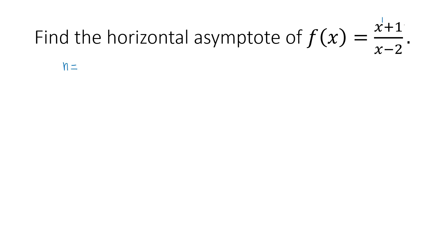The constant 1 actually has x to the 0 beside it. Recall that x to the 0 equals 1, so 1 times 1 is 1. By comparing the exponents 1 and 0, 1 is greater, so the degree of the numerator n is 1. Similarly, the degree of the denominator m is also 1, since x is raised to the first power and 1 is greater than 0. So m equals 1.